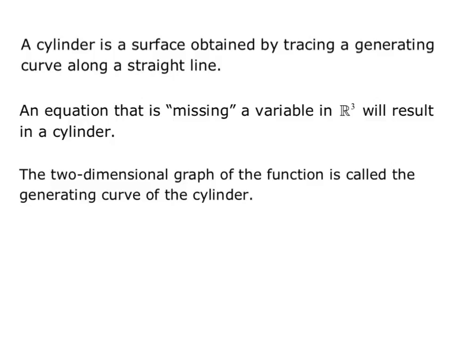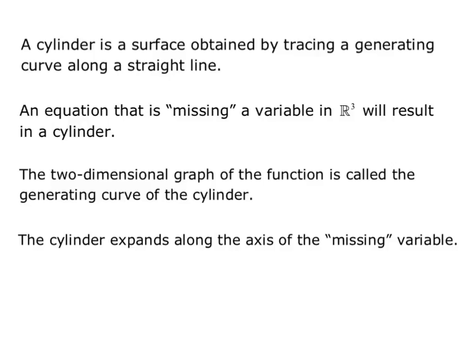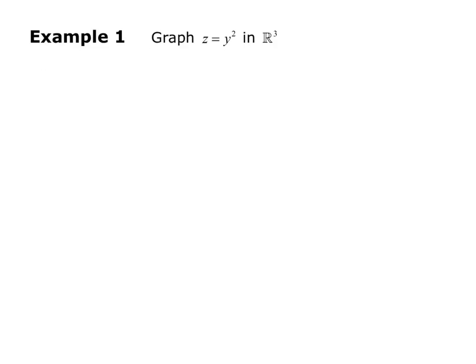The two-dimensional graph of the function is called the generating curve of the cylinder. The cylinder expands along the axis of the missing variable. In this example, we want to graph z = y² in R³. Looking at that equation, there's no x listed, and so that tells us there's no restriction on x.